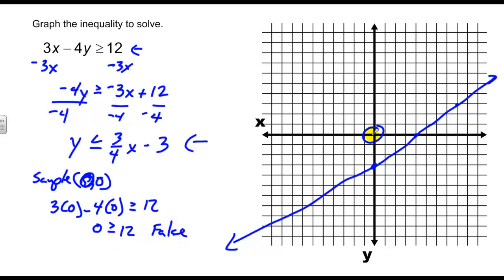So since this point is not in the solution set, none of the points in this region will be in the solution set. Therefore, I have to shade below. And if we want proof of that, pick a point in the region that I just shaded.